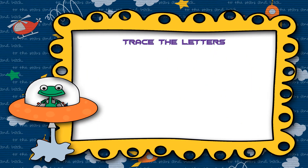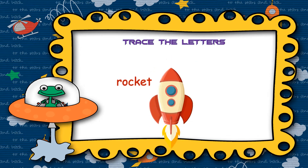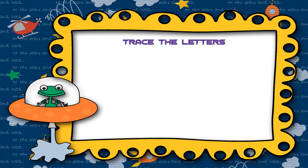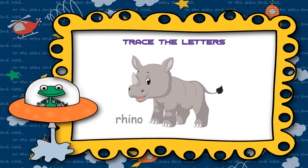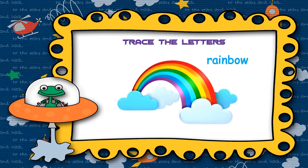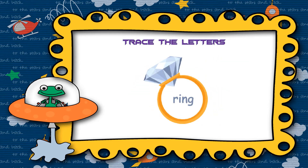Now, going to space, let's learn some objects starting with letter R. R for Rabbit, R for Rocket, R for Red, R for Rose, R for Rhino, R for Rainbow, R for Ring.